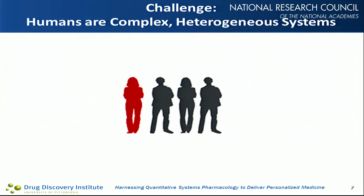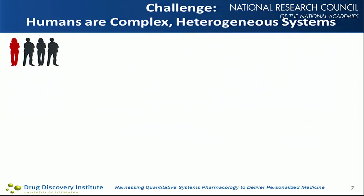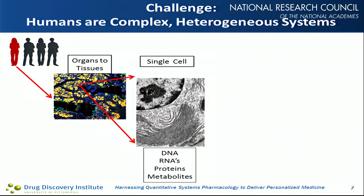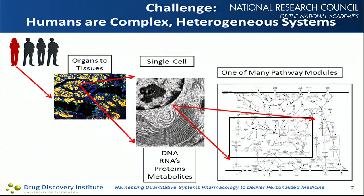One of the challenges we know is that humans are complex heterogeneous systems. Even if we take an individual from that population and look at organs, tissues, down to single cells and the components of those cells, we find that normal and abnormal functions occur through interactions within pathways. There is great heterogeneity within pathways even within one individual. The challenge isn't just heterogeneity from person to person based on genetic background, but also heterogeneity and plasticity within individuals.